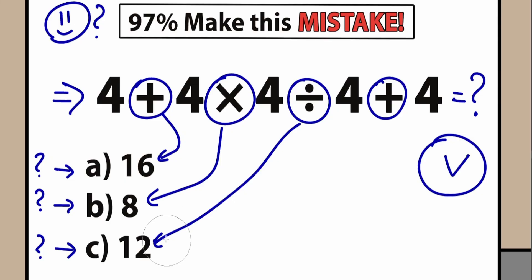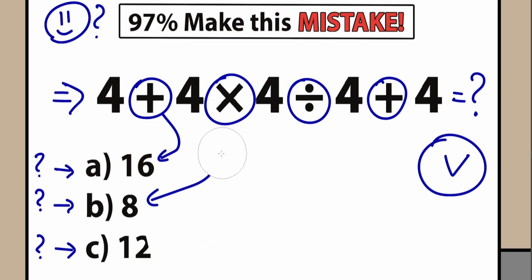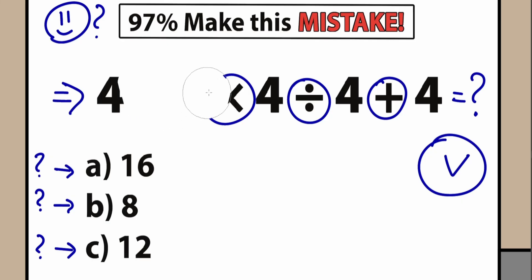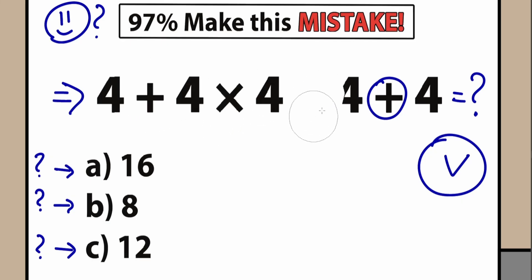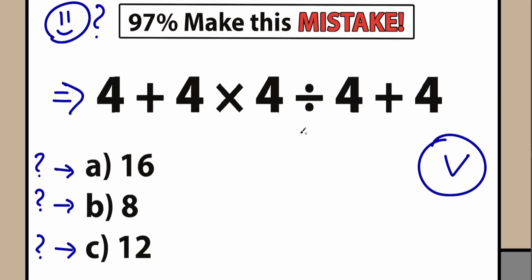If we want one correct answer, we need to know the correct order of operation. This is an extremely important thing — not only in terms of math, but in any science. When you learn biology or chemistry, you need to know the correct method, correct principle, correct algorithm. In terms of math, we need to know the correct order of operation.